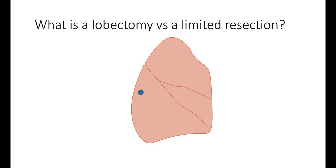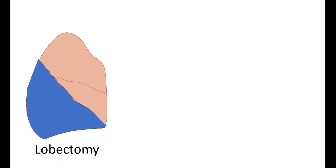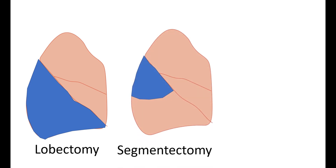As a refresher, a T1 tumor is a tumor that is less than or equal to 3 centimeters in greatest dimension surrounded by lung or visceral pleura. Lobectomy is when the entire lobe of the lung is removed — in our patient, it would be the right lower lobe.